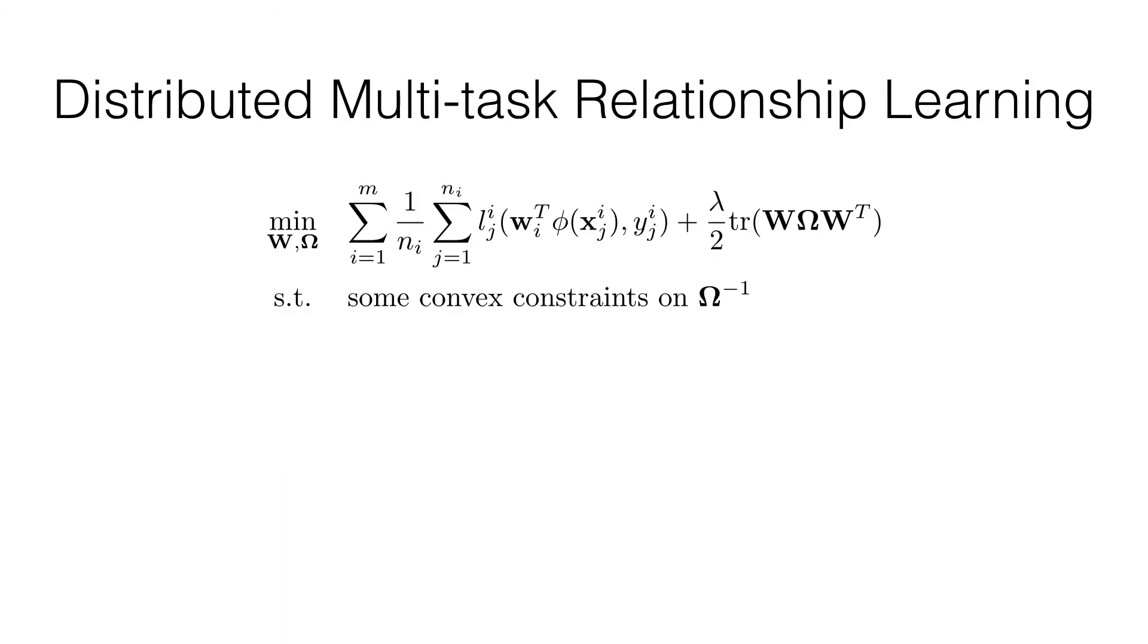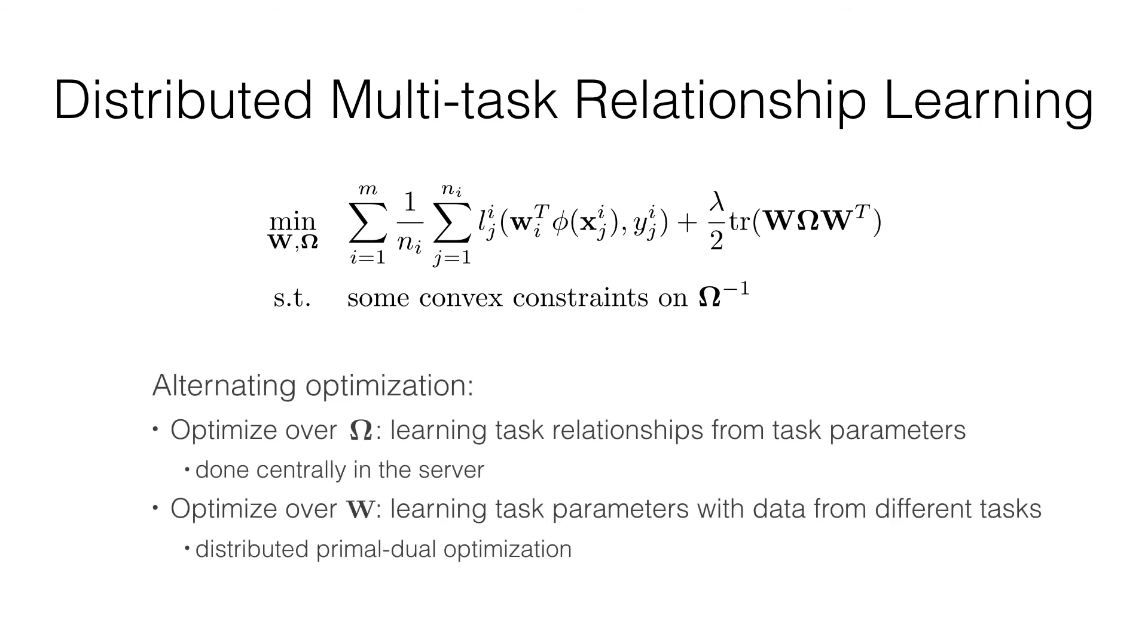We consider a general family of multi-task relationship learning problem. Omega inverse is the task covariance matrix in which the task relationships are embedded. Alternating optimization is proposed. In the Omega step, task relationships are learned centrally from all the task parameters. In the W step, distributed primal-dual optimization is proposed.